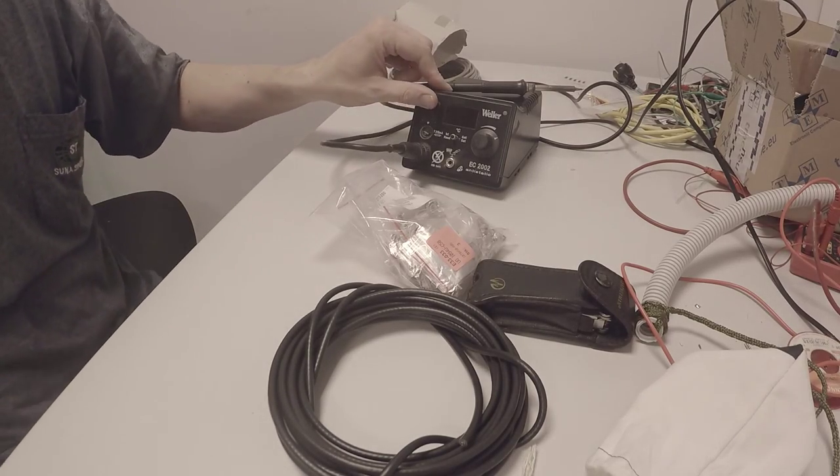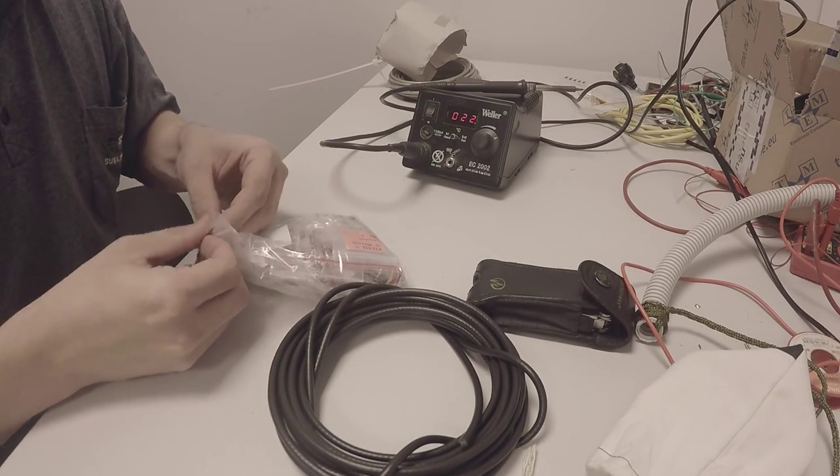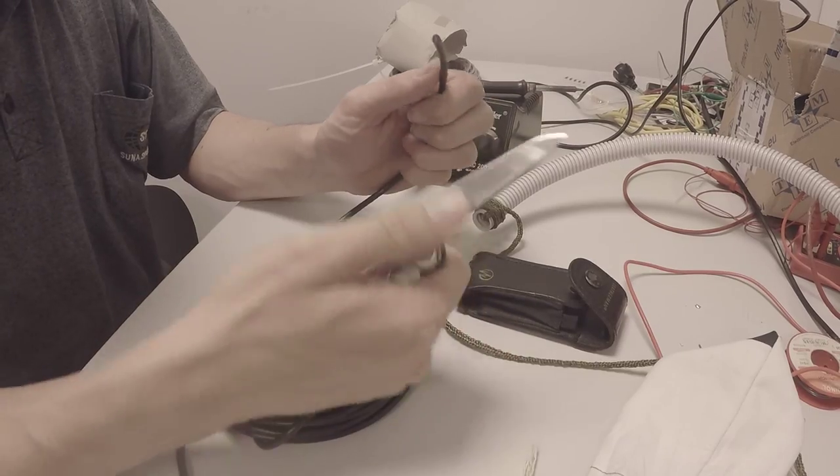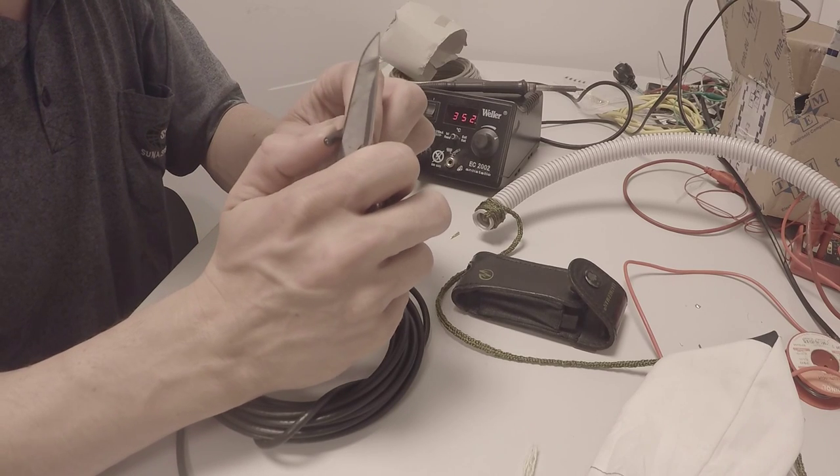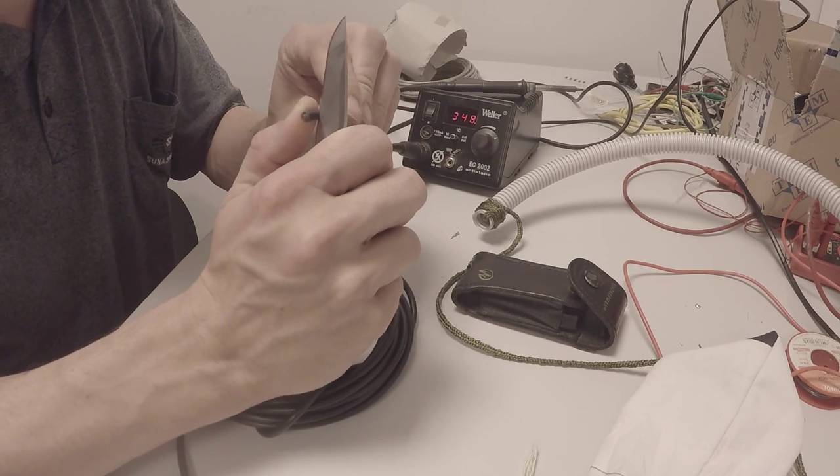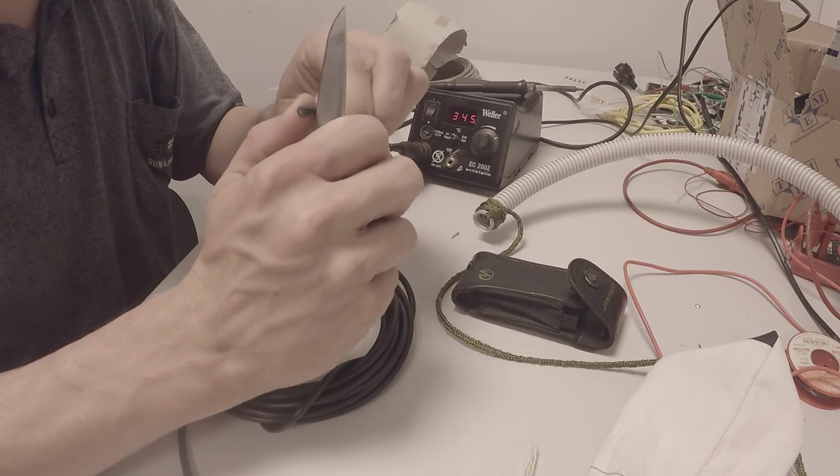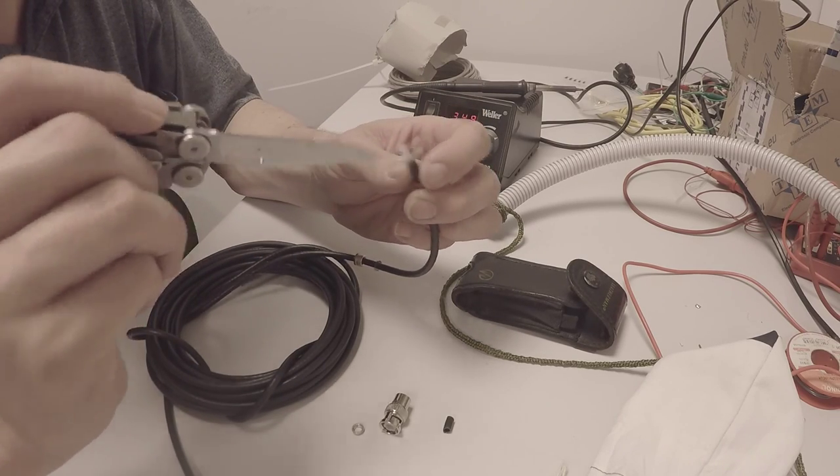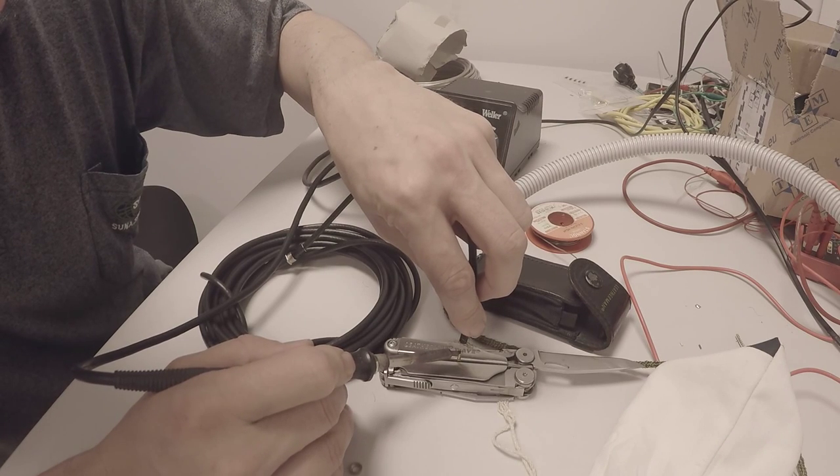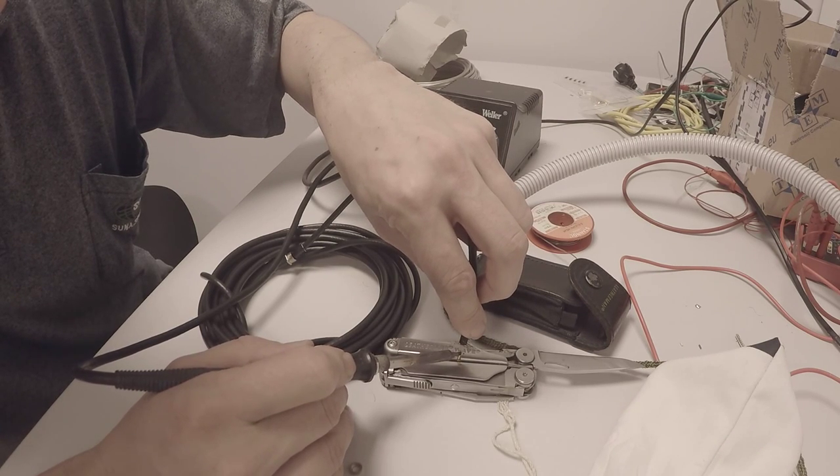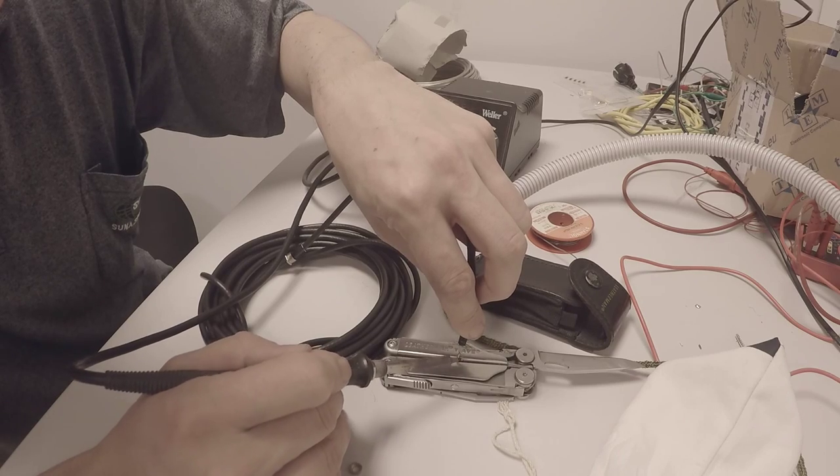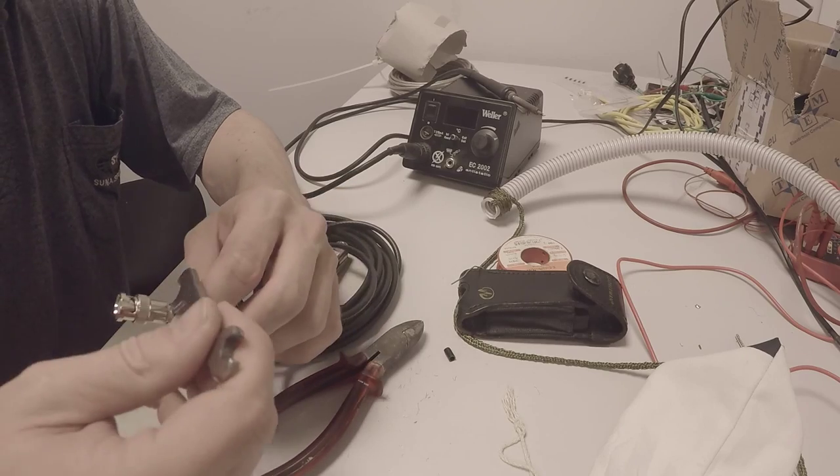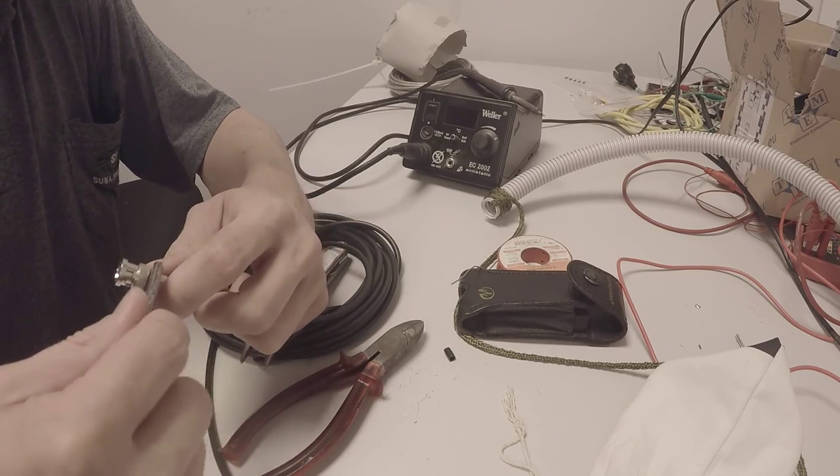So finished. The next step would be to attach a connector. The input of the DVB-T stick is 75 ohms, but I use a 50 ohms BNC connector because I can attach this easier to my impedance analyzer I have at work. This is just to show how I soldered it on. Mounted, finished.